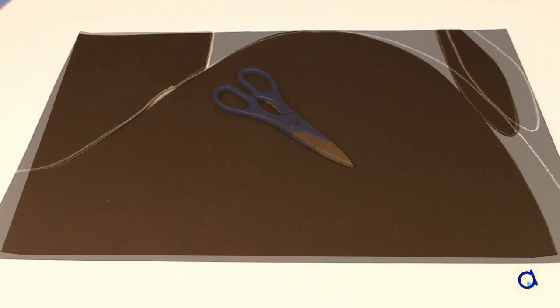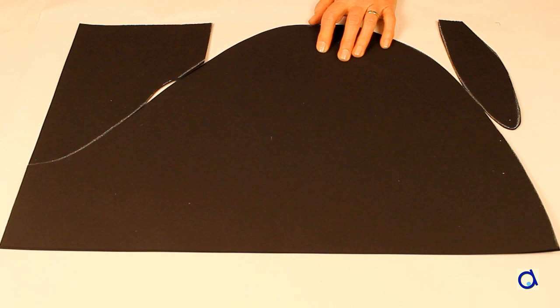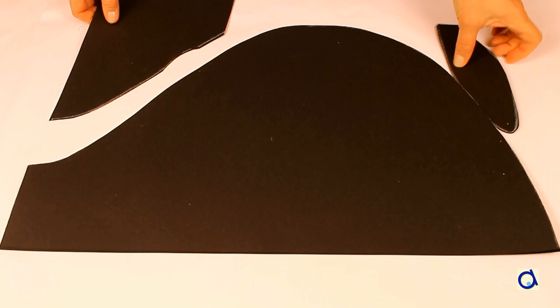Cut the two layers of Bristol paper to obtain on one hand the body of the whale and on the other, the tail. With the rest of the paper, you can make fins for example.